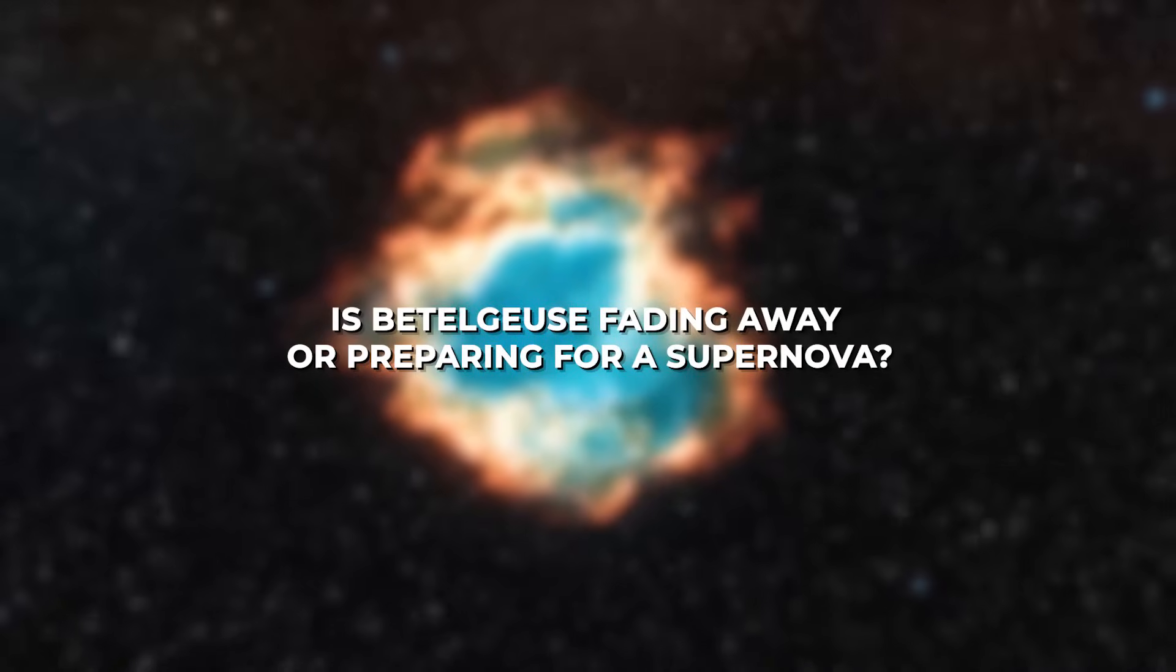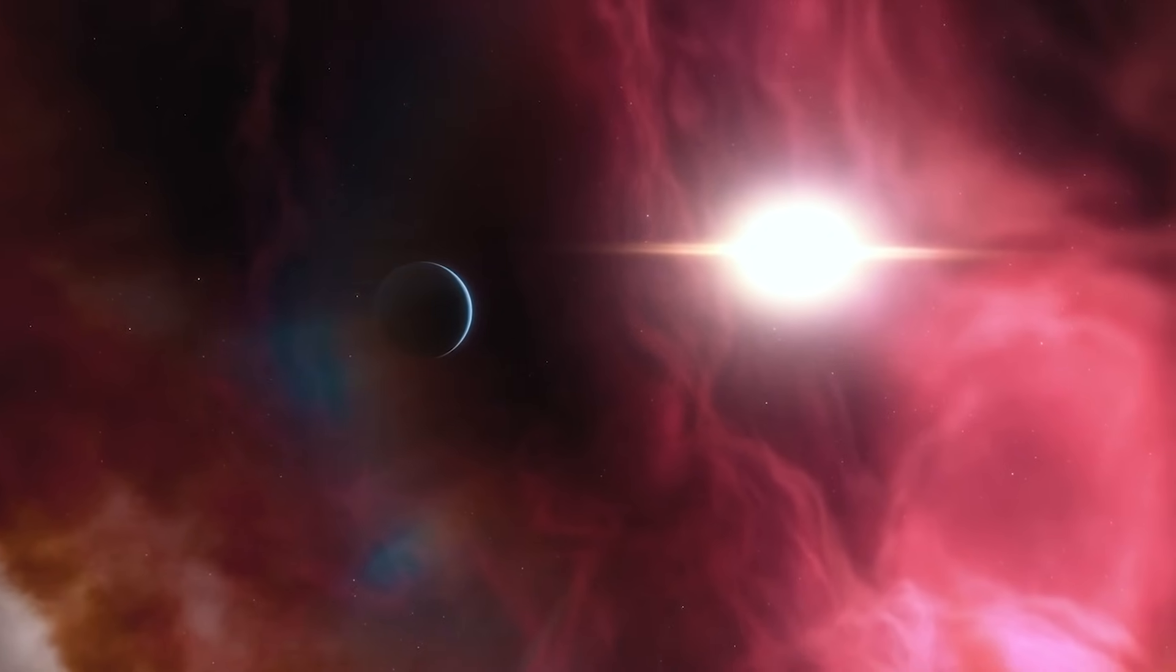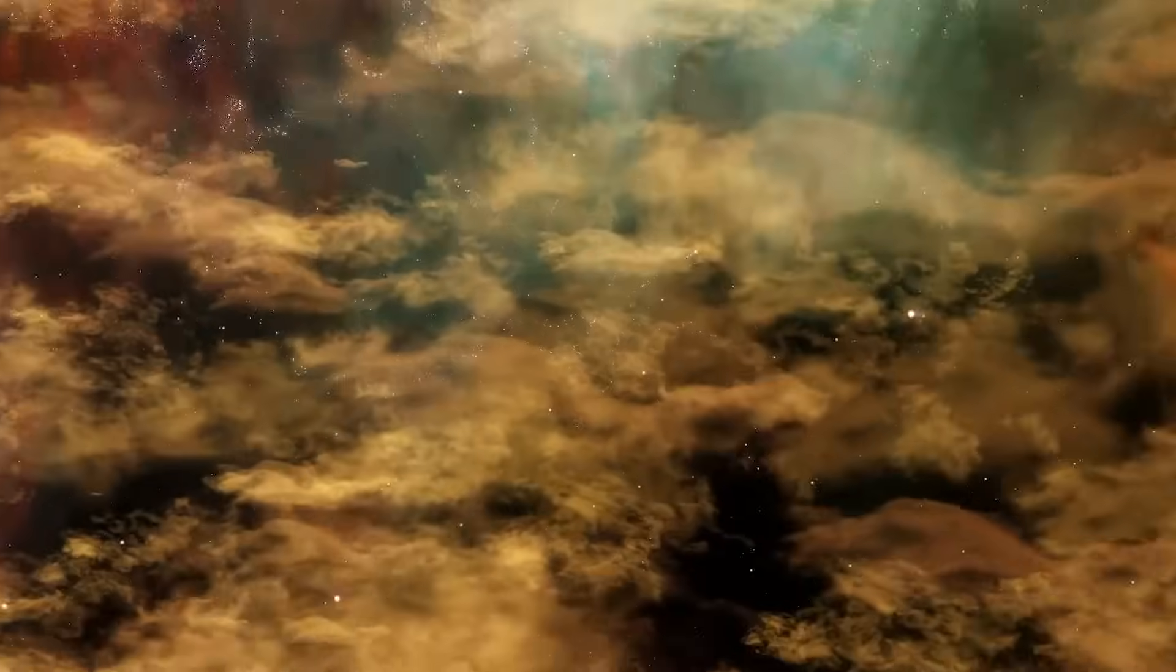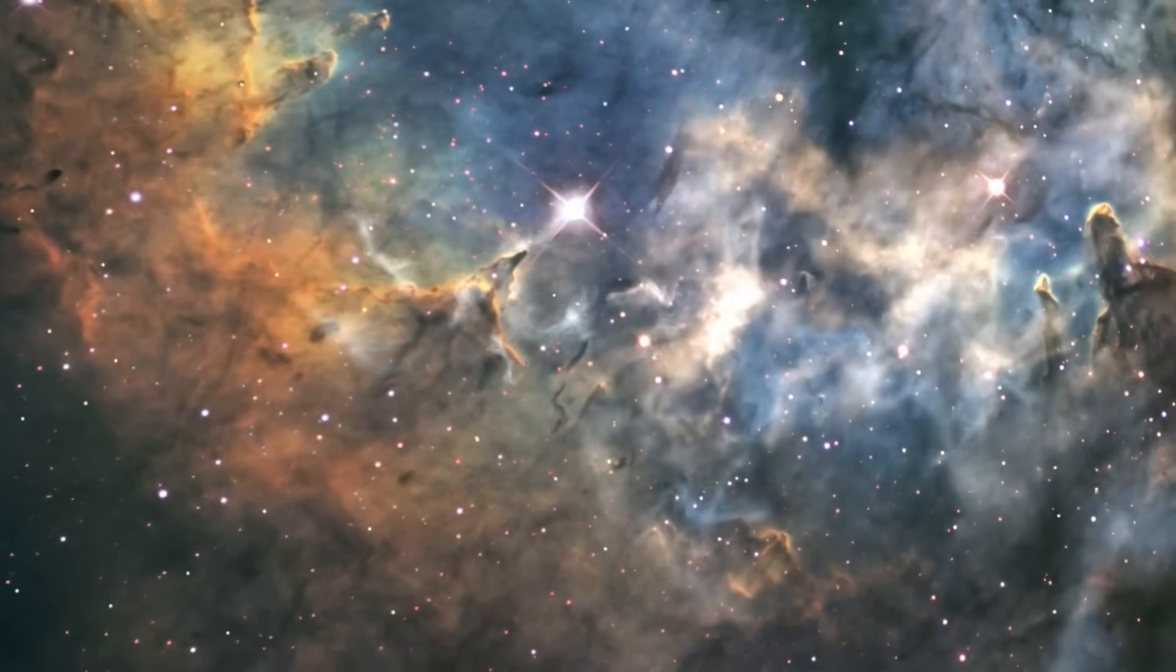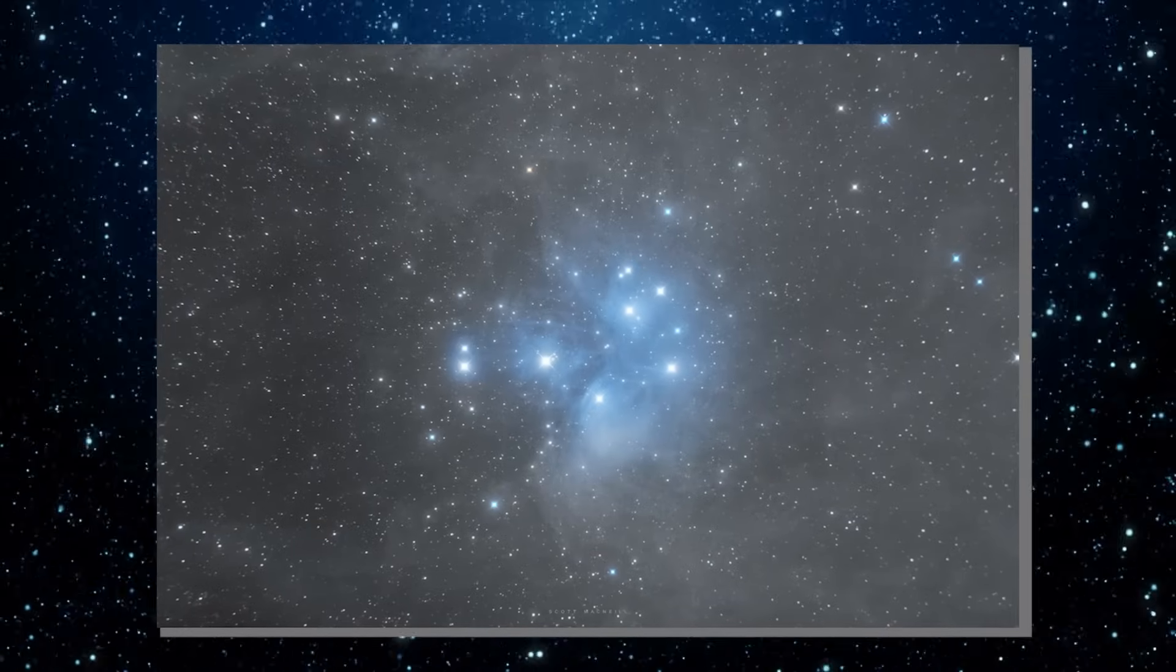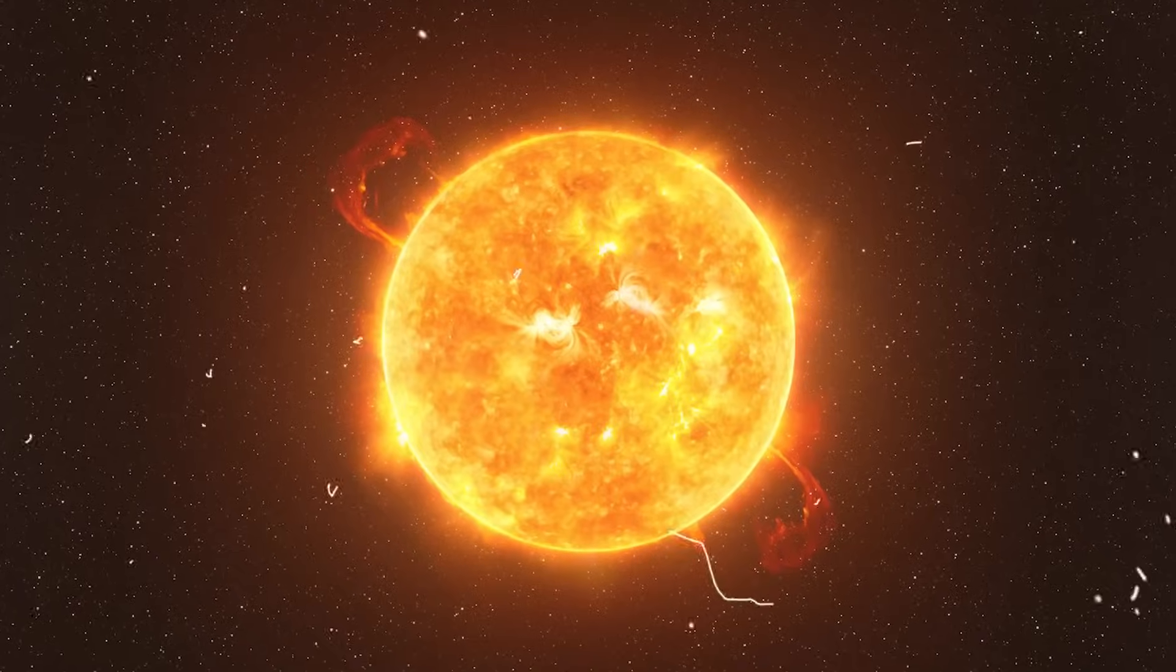Is Betelgeuse fading away or preparing for a supernova? There are no straight answers to this question, yet numerous theories have emerged in an attempt to explain this puzzling event. Some experts believe that dust clouds might be blocking Betelgeuse's light, causing it to appear dim. As the star ages, it sheds its outer layers, releasing dust and gas into space. This cosmic debris can come together to form dense clouds that obstruct the star's brightness from our viewpoint. Recent observations have shown that Betelgeuse is expelling more material, which could be contributing to the formation of these dust clouds. According to this theory, the sudden dimming of Betelgeuse is a natural part of the star's life cycle, especially for red supergiants like Betelgeuse.